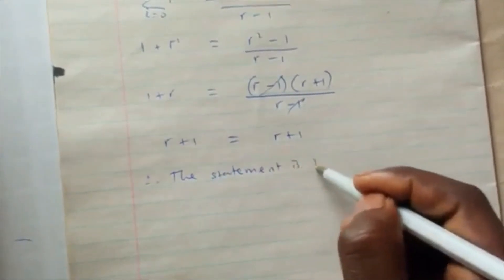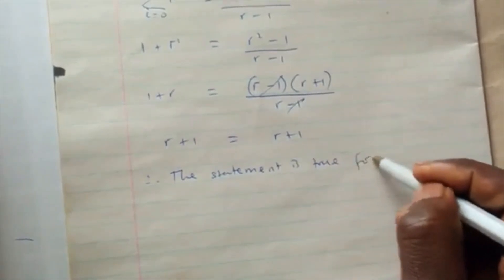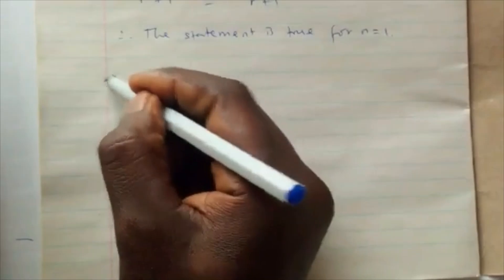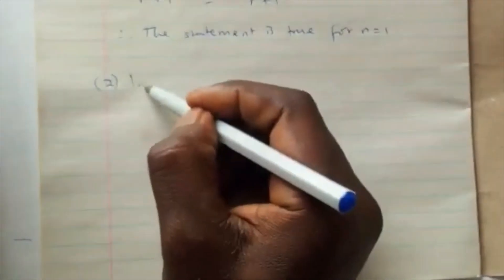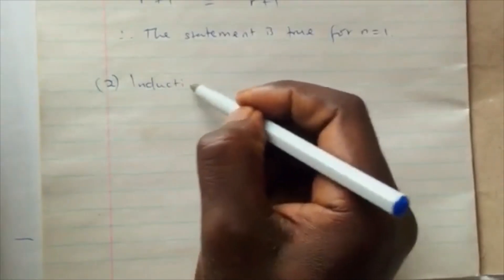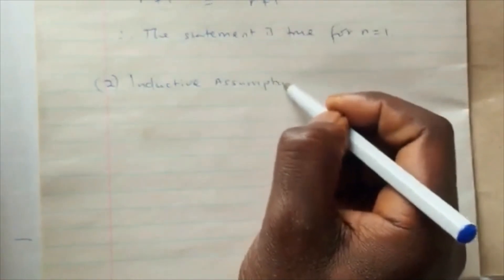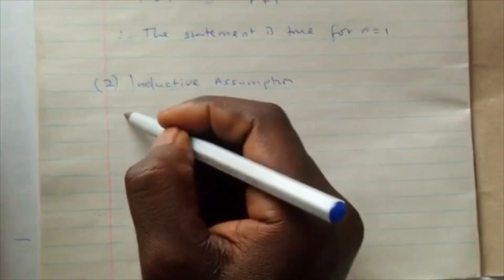Therefore the statement is true for n equals one. The next stage in our proof by induction is called the inductive hypothesis or inductive assumption. This is stage two. On the inductive assumption, we assume n equals k.